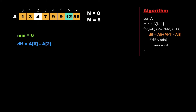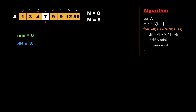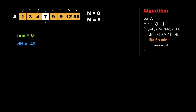Now i points to index 2, where we calculate diff as a[6] minus a[2], which is 8. Since 8 is not less than 6, we don't update min and simply increment i. Now i points to index 3, where we calculate diff as a[7] minus a[3], which is 49. Since 49 is not less than 6, we don't update min. We've now reached the condition where i equals n minus m, so the minimum difference is 6.